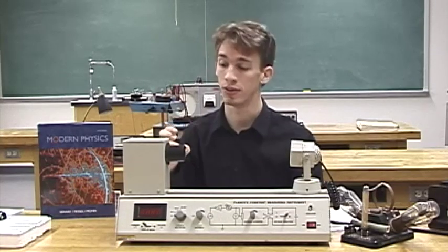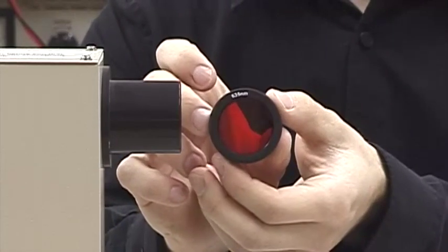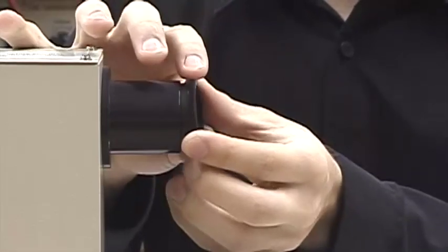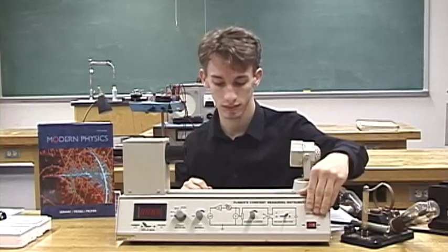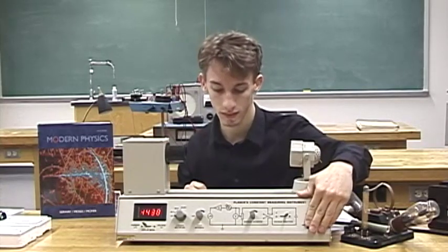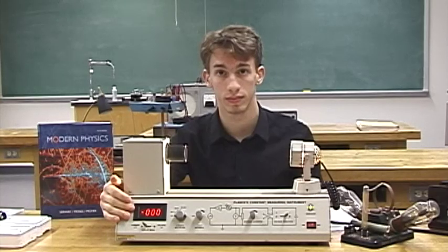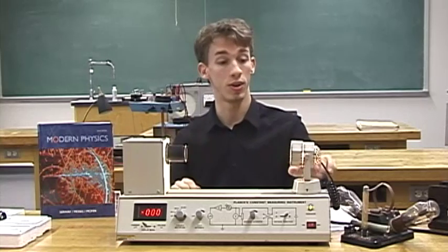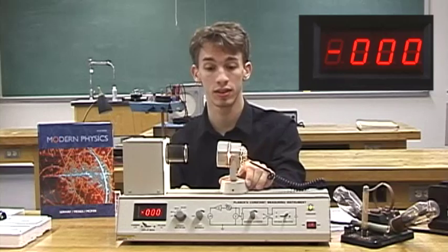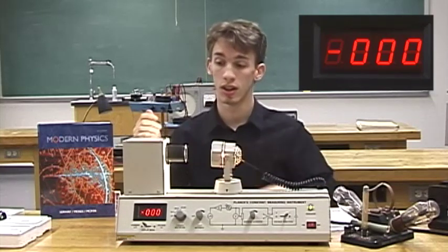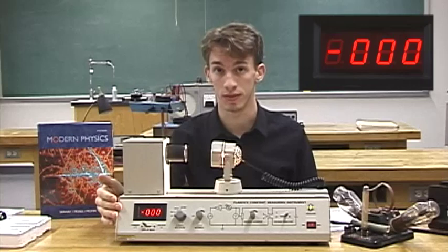We're going to place a colored filter on it to narrow it down to just one wavelength of light. Here, 635 nanometers. We'll adjust the voltage until we get the zero current traveling across the photo cell. Notice, as we adjust the intensity of the light, the current does not change for this voltage.